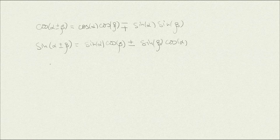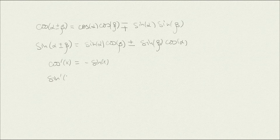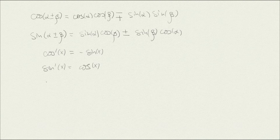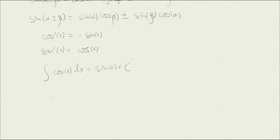This pattern continues: the derivative of cosine x is minus sine x — cosine is a snob, it flips the sign. The derivative of sine x is cosine x — sine is a nice guy, giving you his friend. For integrals: the integral of cosine gives sine plus a constant, and the integral of sine gives minus cosine — because sine remembers that cosine was the snob.